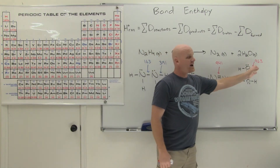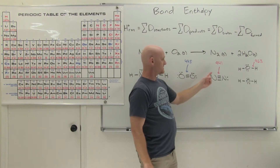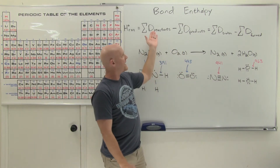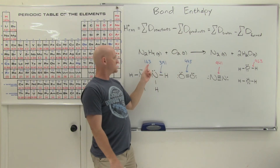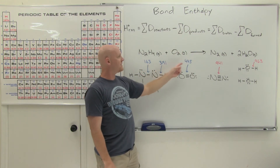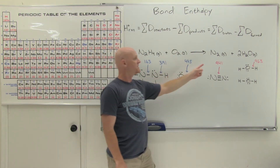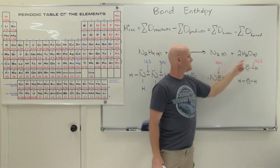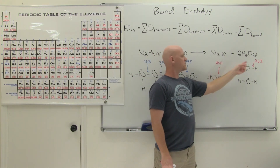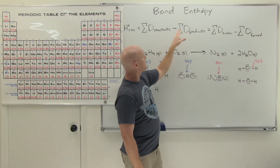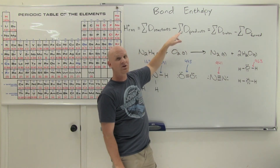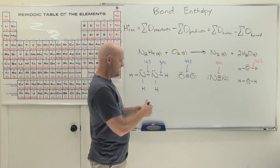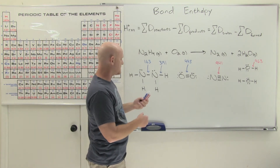The product bonds are going to release energy — they're exothermic — not cost energy. That's why we do reactants minus products: the reactant bonds add in as an energy cost, while the product bonds represent energy released, which is negative. We don't manually flip the sign to negative; the subtraction in our equation accounts for that. So no need to change any signs — from here it's plug and chug.